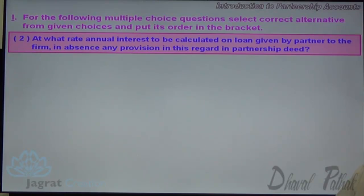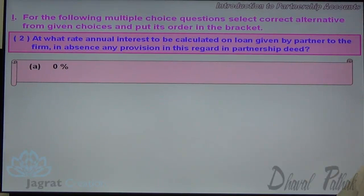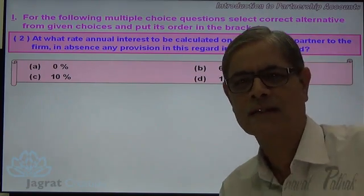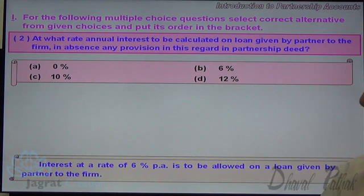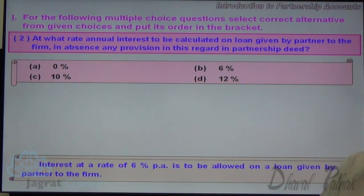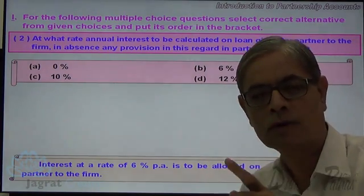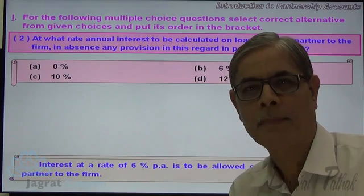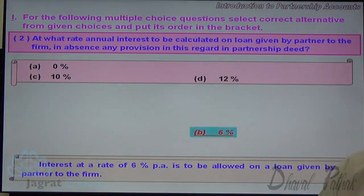Next. At what rate should annual interest be calculated on a loan given by a partner to the firm in the absence of any provision in this regard in the partnership deed? The options are 0%, 6%, 10%, and 12%. The answer is 6%. Interest at the rate of 6% is to be allowed on a loan by a partner to a firm — not on a loan by a firm to a partner. Remember it. 6% is the correct answer.